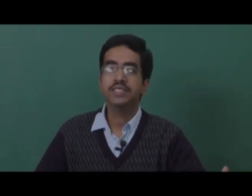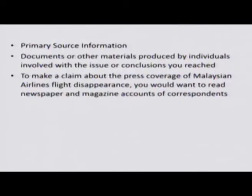The next type is primary sources — documents or materials produced by individuals directly involved with the issue. For example, if you are making a claim about the press coverage of the Malaysian Airlines flight disappearance, you would want to read newspaper and magazine accounts and consult people directly involved with the issue.